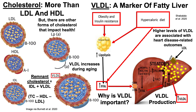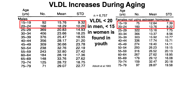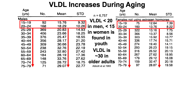VLDL also increases during aging, and higher levels of VLDL are associated with heart disease-related outcomes. Looking at aging-related data for VLDL: in youth, defined as men and women 15 to 24 years old, VLDL is less than 20 in men and less than 15 in women. Going from 25 years old up to 79 years old for both men and women, VLDL levels increase up to about 30 in both men and women.